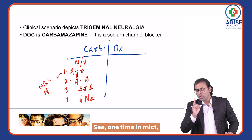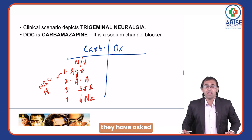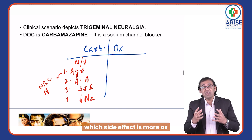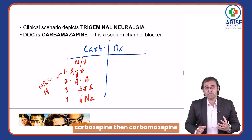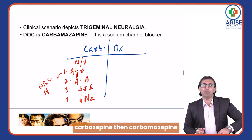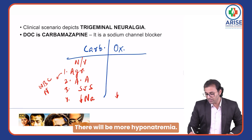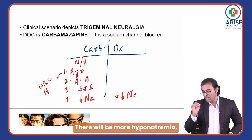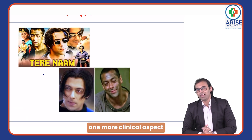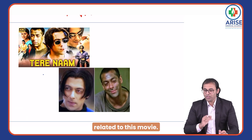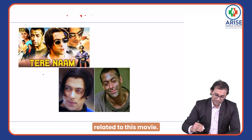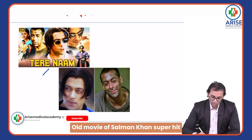In an exam, they have asked which side effect is more common with oxcarbazepine than carbamazepine — the answer is hyponatremia. Hyponatremia occurs more with oxcarbazepine than with carbamazepine.